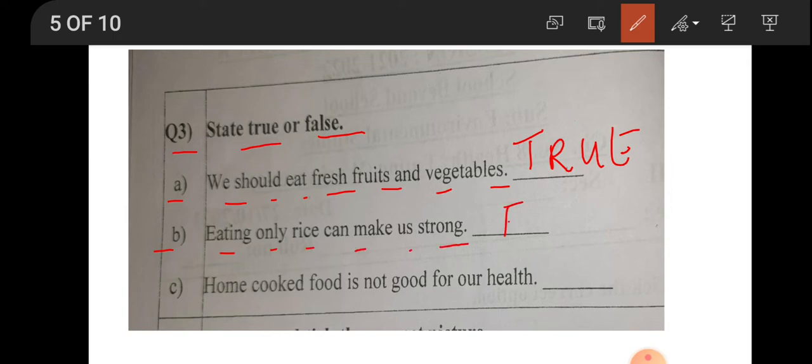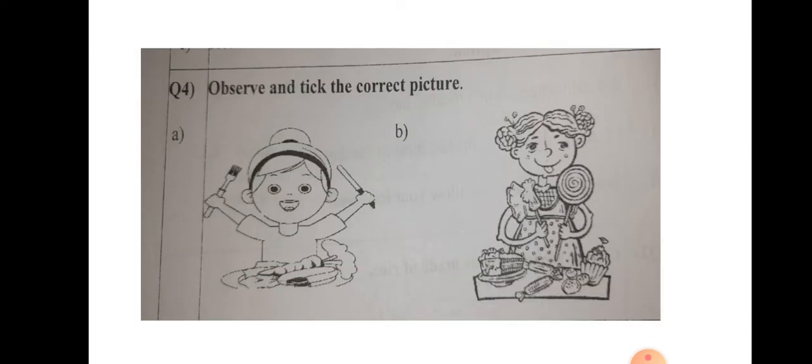If you eat only rice you will get carbohydrate. What about the protein and the other minerals, other vitamins and all? You will not get children. So we should eat all different kinds of food. C, home cooked food is not good for our health. He is saying that which mama makes is not good. No. It is false. It is absolutely good. It is saying not. Negative. So it is wrong.